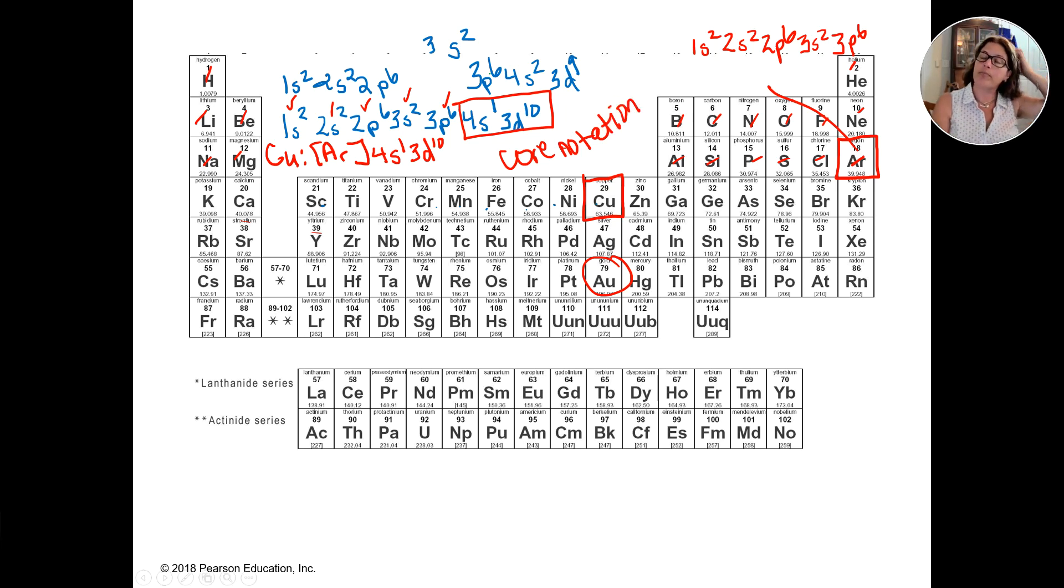That matches this, this, this, this, and this. So I can say copper is everything up to and including argon plus this. This is core notation. Okay. You will need to know how to write both core notation and also the long way. But if it's a long way one, I won't have you do it with something that's super huge. Maybe, you know, something that's way more simple.